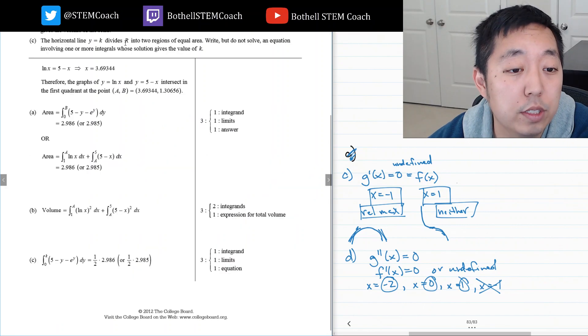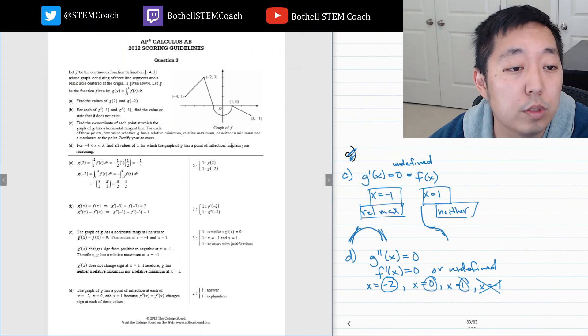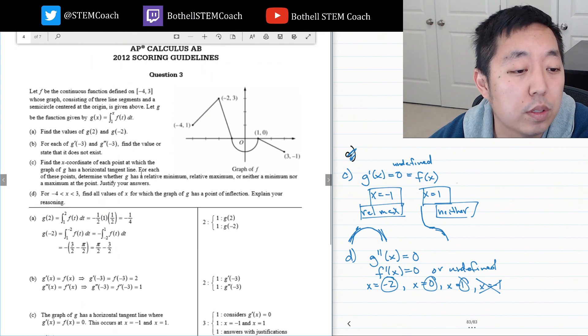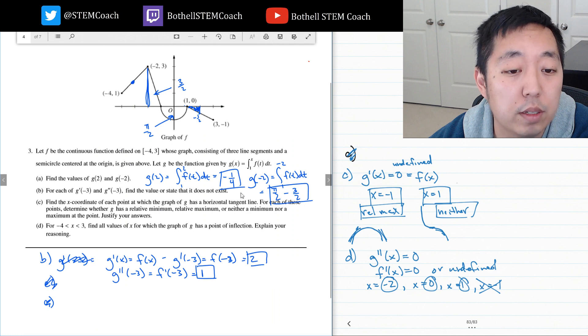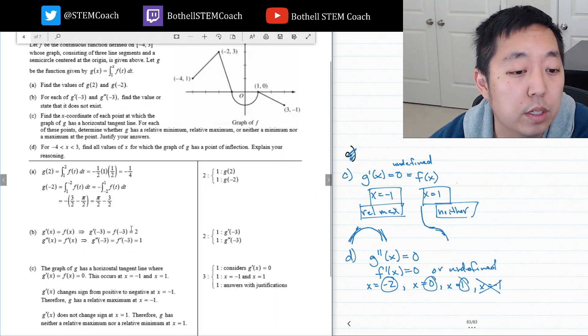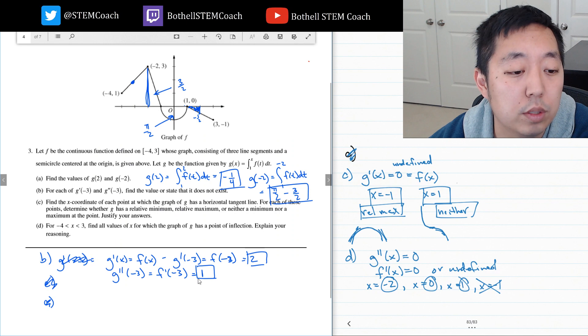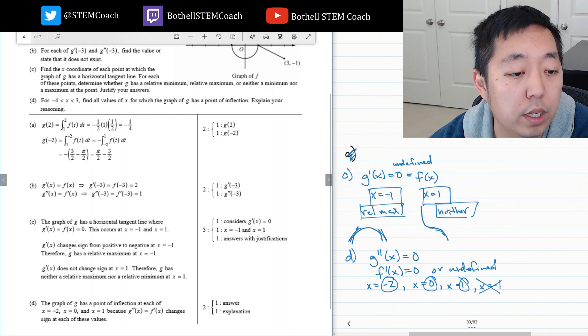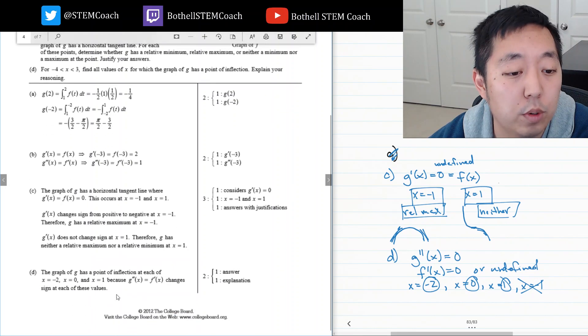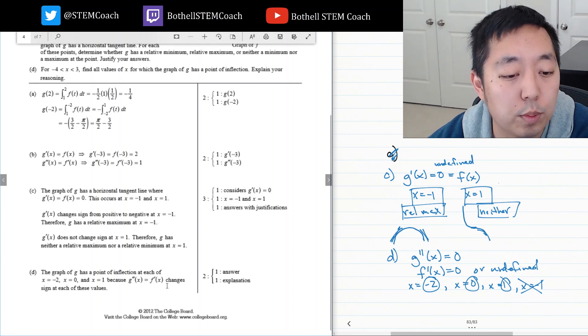So, I think that wraps up that question. So, let's take a look at the solutions. Negative one fourth. Pi over two minus three halves. That would have got negative one fourth. Pi over two minus three halves. Good. Two and one. Two and one. Because G double prime changes sign at each of those values. Alright.